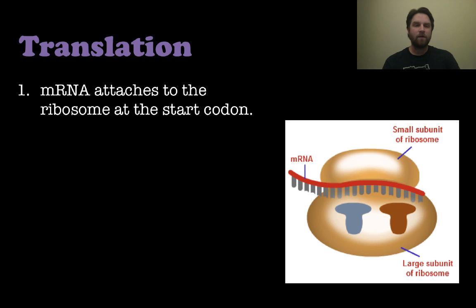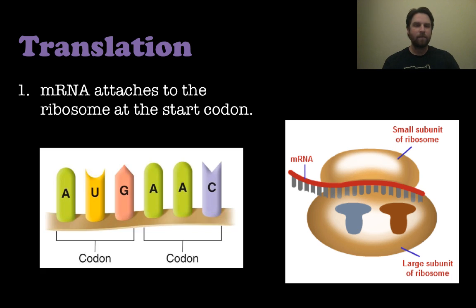Let's look at the steps of translation. First, the messenger RNA attaches to the ribosome at the start codon. A codon is a triplet sequence of nucleotide bases — AUG is one codon, AAC is another codon. It's three base pairs per codon.